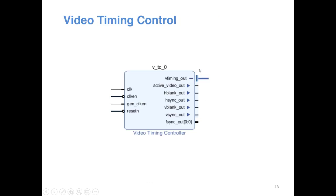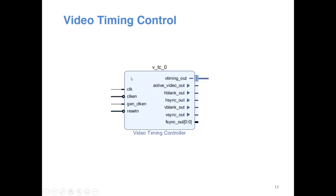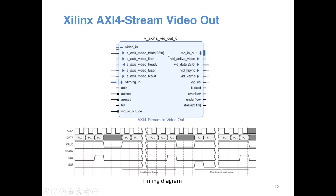Along with the video data, this IP needs information about horizontal and vertical sync. Those signals are provided by another IP called the Video Timing Controller. This IP is very simple to use — just specify the resolution you want and provide the pixel clock we calculated, and it will automatically generate the hsync and vsync signals for the stream IP.